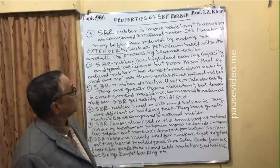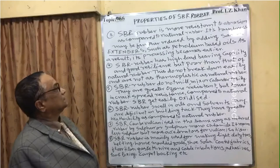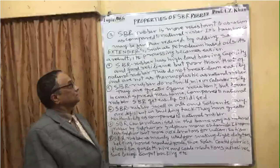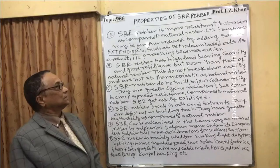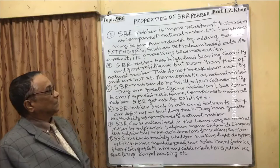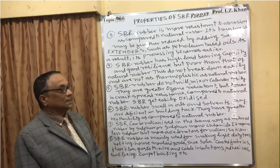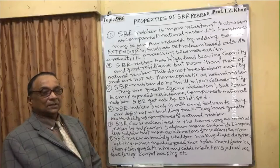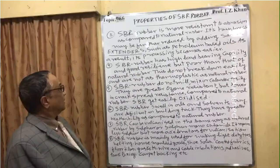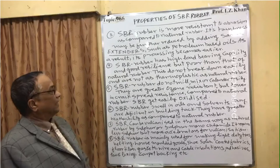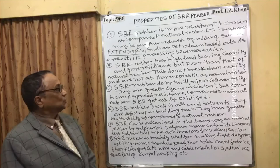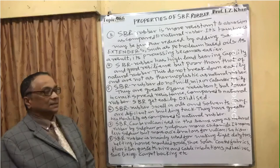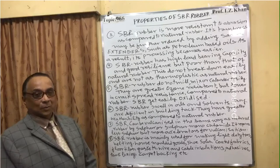Point three — properties of SBR rubber: SBR rubber is more resistant to abrasion compared to natural rubber. However, its toughness may be further reduced by adding extenders such as petroleum-based oils, which makes its processing easier. Point four: SBR rubber has high load-bearing capacity and good resilience, but poorer than that of natural rubber. It does not break down easily and is not as thermoplastic as natural rubber.